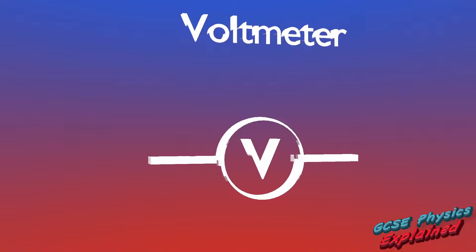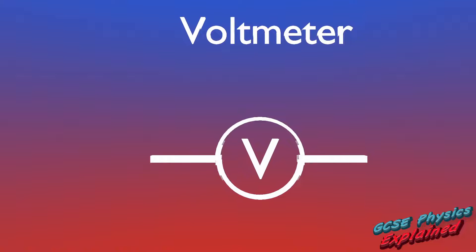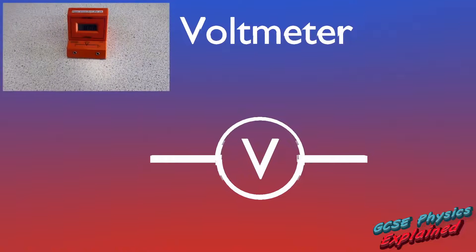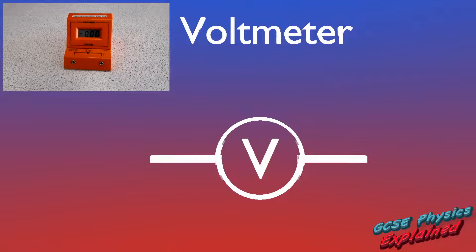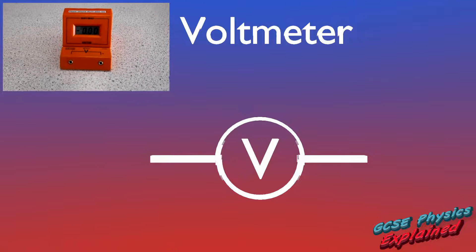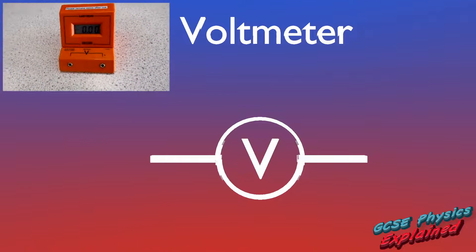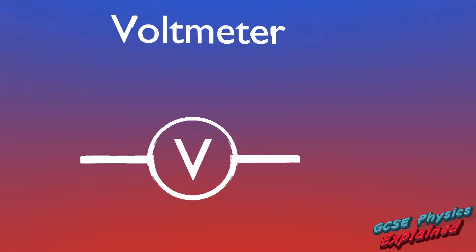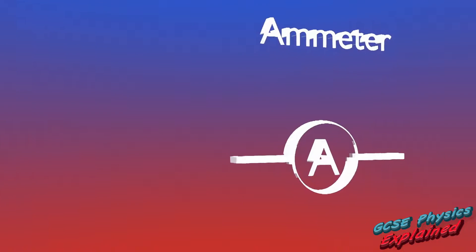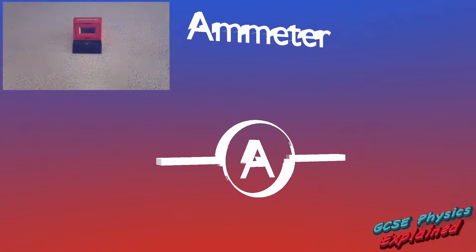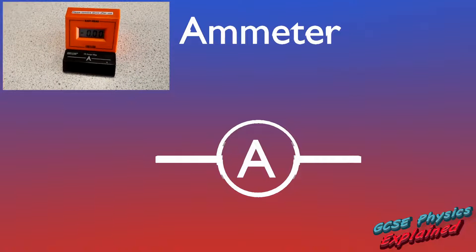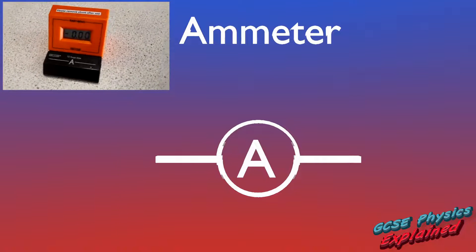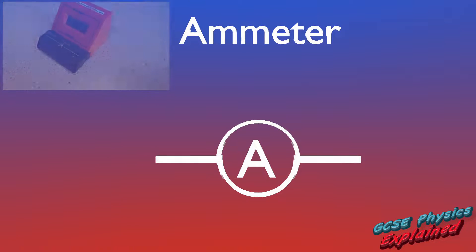Voltmeters measure voltage, which is sometimes called potential difference. It's just a circle with a V in it. Ammeters measure current — it's just a circle with an A in it.